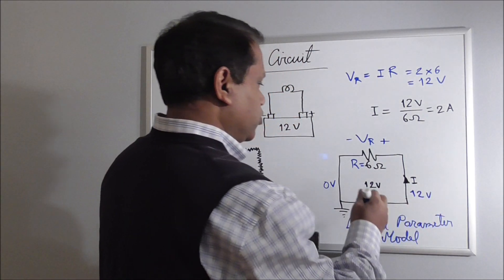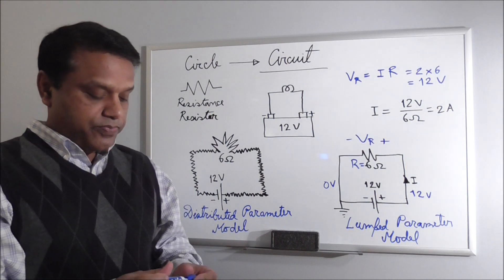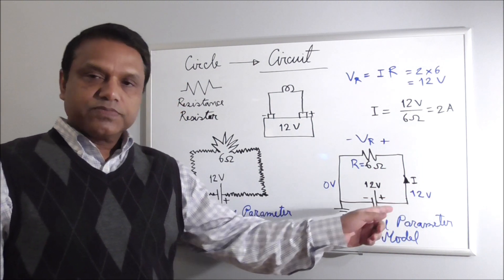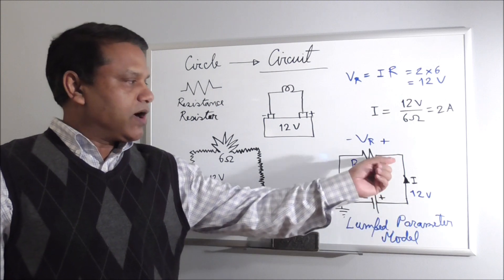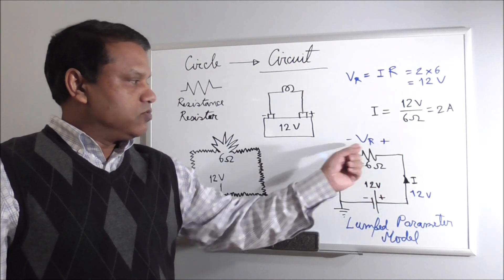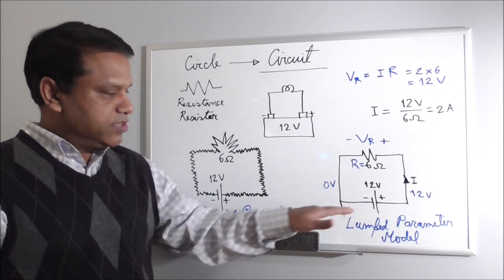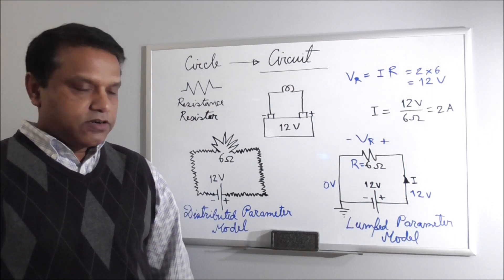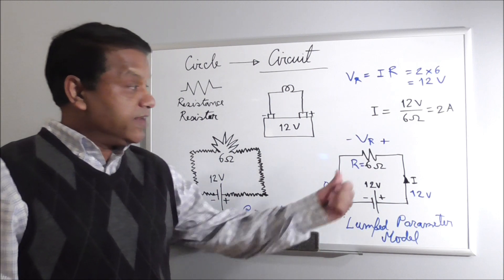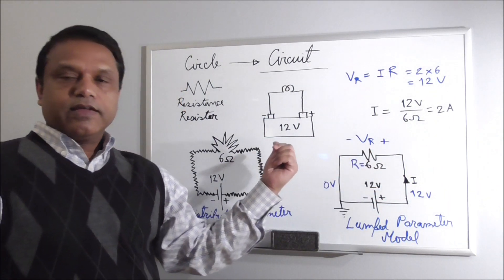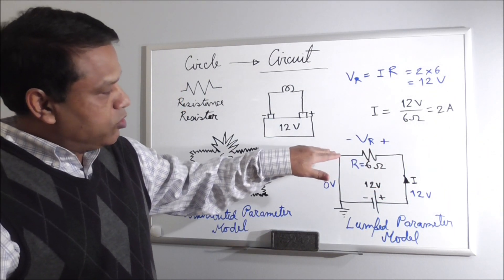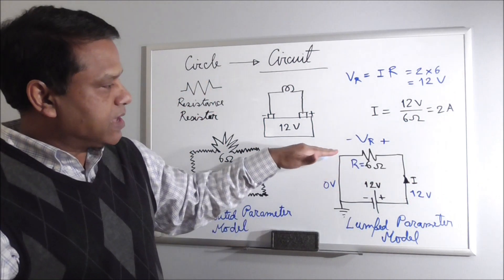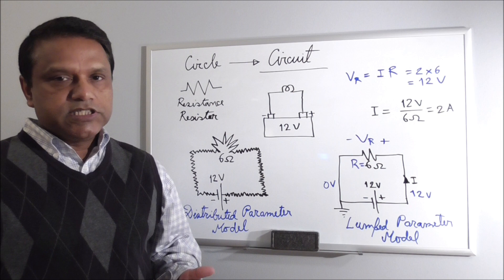We should also learn a couple of terms: voltage drop and voltage rise. When you are going from minus to plus, voltage is rising — 0 volt to 12 volt. And when you come from plus to minus, voltage is dropping; we call this voltage drop. A battery causes voltage rise, and current through a resistor causes voltage drop in the direction of current flow. So in this resistor, voltage drop is happening in the direction of current, and rise is the opposite of drop.